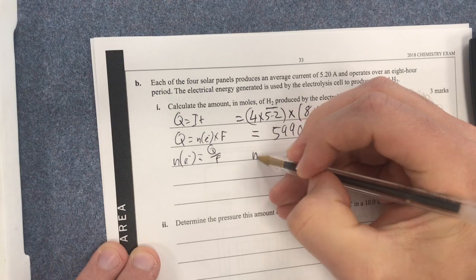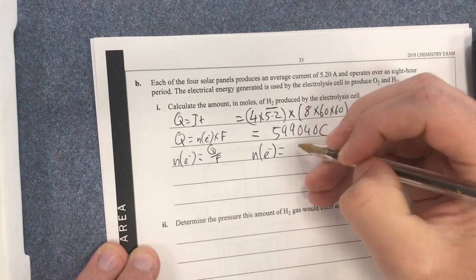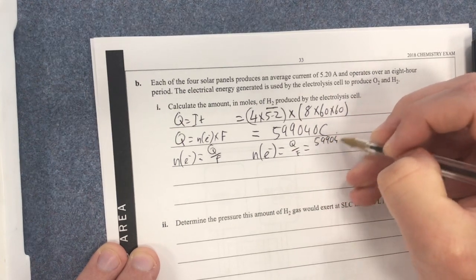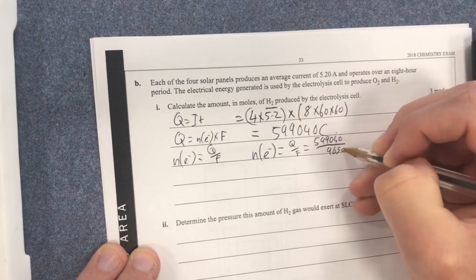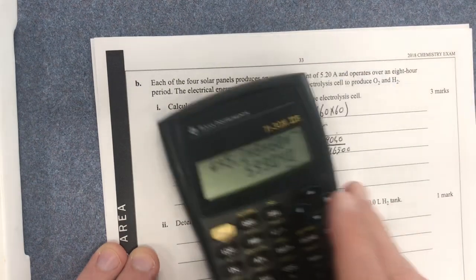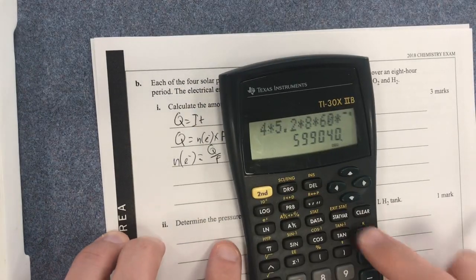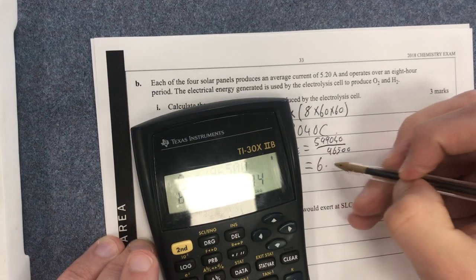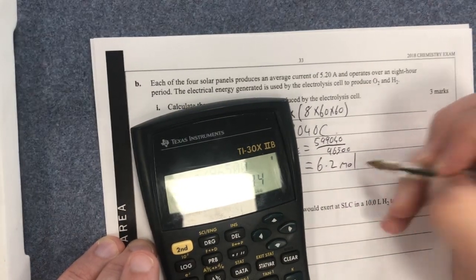Then I know my number of moles of electrons is going to be equal to Q over F. So therefore that equals 599040 divided by 96500. So I take that number and I go divide by 96500. That gives me 6.2 moles of electrons.